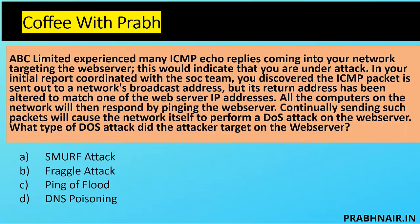ABC Limited experienced many ICMP echo replies coming into their network targeting the web server. This would indicate the organization is under attack. In the initial report coordinated with the SOC team, it was discovered that ICMP packets are sent out to a network broadcast address, but the return address has been altered to match the web server's IP address. All computers on the network then respond by pinging the web server, and continually sending such packets causes the network itself to perform a DoS attack on the web server. What type of DoS attack did the attacker perform?